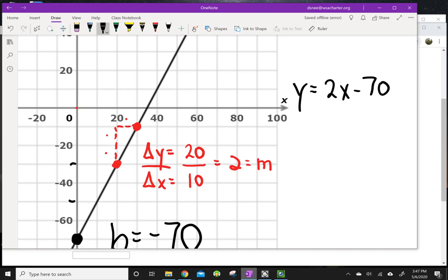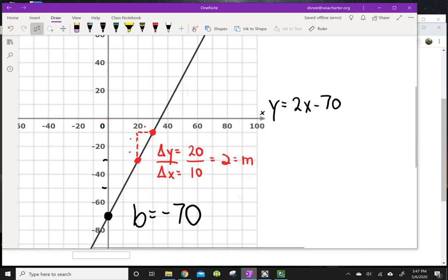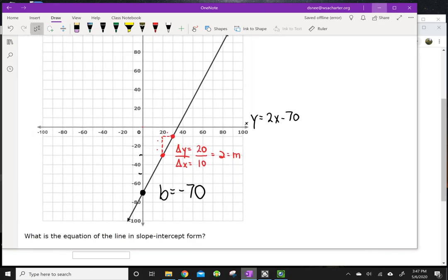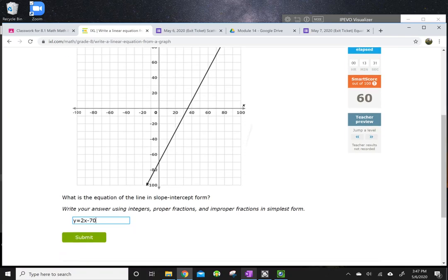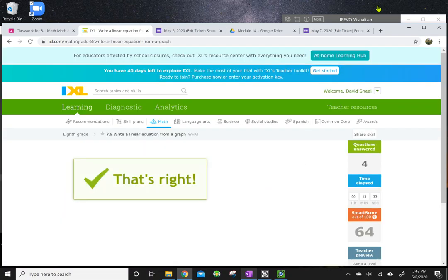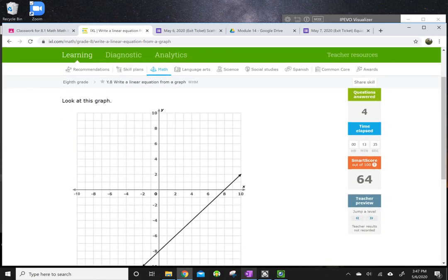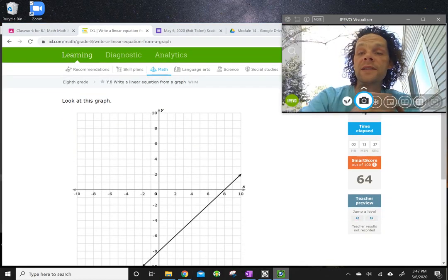We go up two units and over one unit. Let's try it. Y equals 2x minus 70. All right. And that's it, boys and girls. That's all I'm going to do with you guys today.